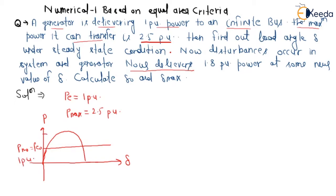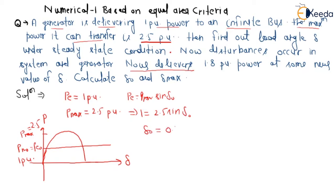The value of p_max has been given as 2.5 pu. We apply the formula: p = p_max * sin(delta), so 1 = 2.5 * sin(delta). Therefore delta_0 = arcsin(1/2.5). Converting to radians, delta_0 = 0.411 radian. This is our first answer.